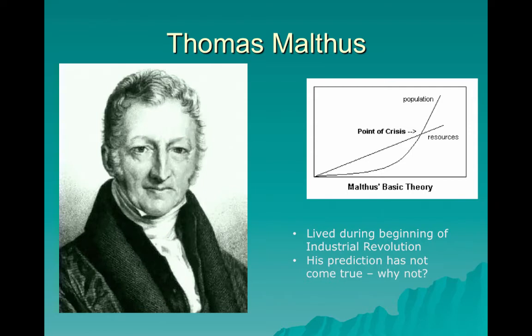As this was happening, Thomas Malthus was an economic thinker of his time. He lived during the beginning of the industrial revolution and became very concerned when he saw the population explosion, because in his time, resources — mostly agricultural yield — were increasing along a linear path while population was growing exponentially. He predicted that at some point population would grow larger than we could feed, leading to famine, war, and disease. His prediction has not come true, largely because industrial agriculture, synthetic pesticides, and fertilizers have allowed food production to keep up with population growth in most parts of the world.